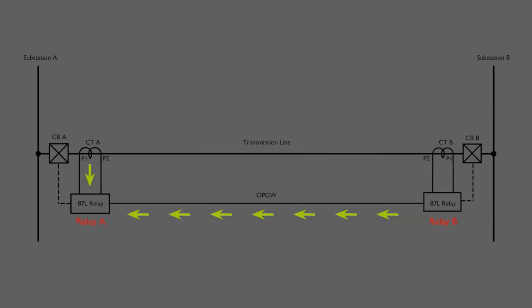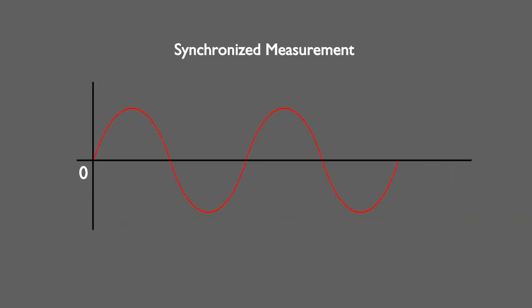To overcome this, differential relays adopt methods to ensure accuracy — the relays use synchronized measurement. Suppose the red sinusoidal wave represents the replica of the primary current of CTA. If we draw the green sinusoidal wave of CTB at relay A, it will be in negative. The green sinusoidal wave represents the replica of the primary current of CTB at relay A. You see there is a time delay of the green wave with respect to the red wave, due to the propagation time of the green wave from relay B to relay A. If both currents are the same but there is still a comparison error, this may cause a malfunction of relay A and trip the associated circuit breaker unnecessarily. This difficulty is eliminated by using synchronized measurements.